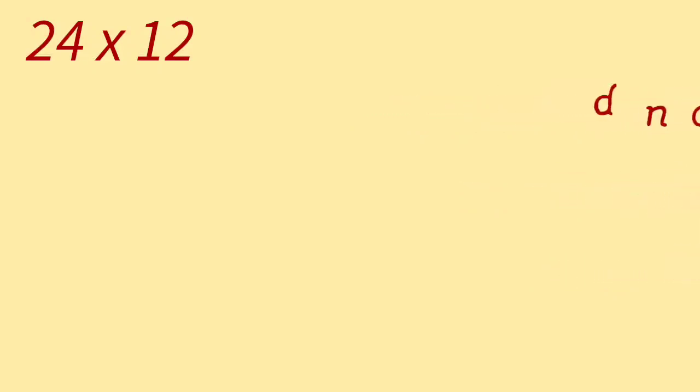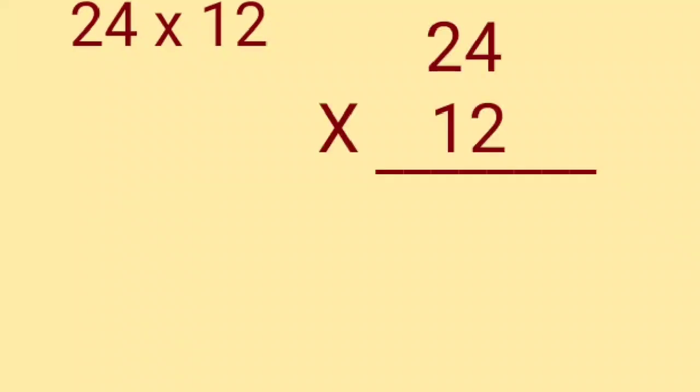In this case, 24 is the multiplicand and 12 is the multiplier. Here, both the multiplicand and the multiplier are two-digit numbers. Let's learn how to multiply a two-digit number by another two-digit number. Let's divide this process into three steps. Step 1: multiply the multiplicand by the digit in the ones place of the multiplier. That is, 24 into 2.